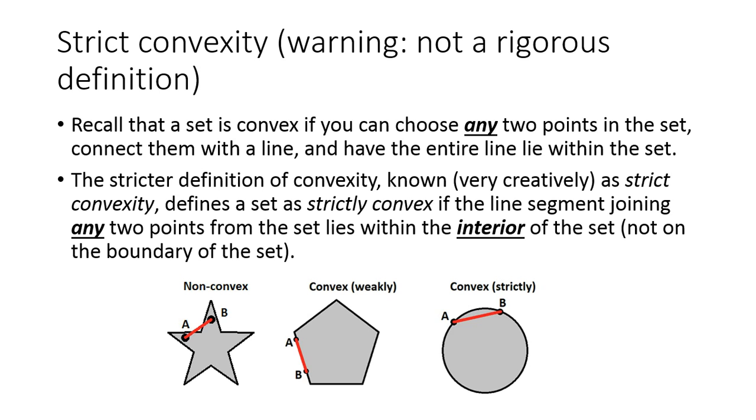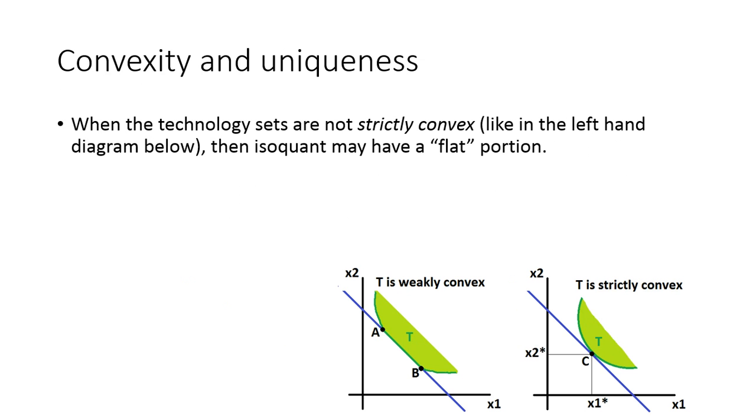So notice in this middle case here, if I pick two points on the boundary and connect them, the red line itself falls on the boundary, meaning this set is not a strictly convex set. However, the circle is a strictly convex set, because any two points I pick on the boundary when I connect the line, the line segment, not including these two points on the edge, falls strictly within the interior of this gray region.